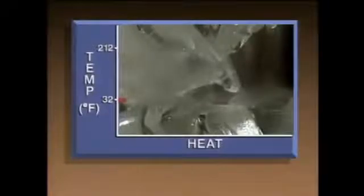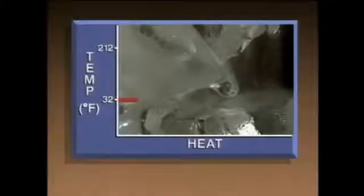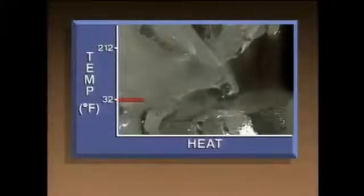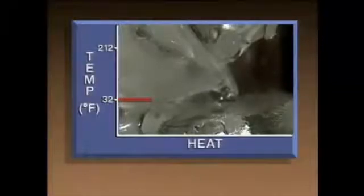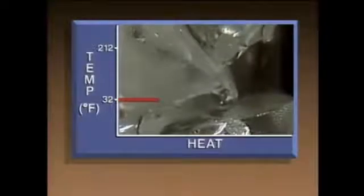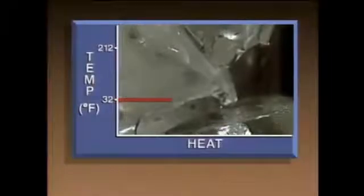We'll heat a beaker of ice to demonstrate phase changes and latent heat transfer, also using a graph to show the relationship between temperature and heat. The ice is melting, but at first the temperature stays at 32 degrees Fahrenheit — latent heat is being absorbed by the ice. The latent heat causes the molecules of ice to overcome the molecular forces holding them together. As a result, the molecules move freely as a liquid, but there is no temperature change — only a phase change from solid to liquid.